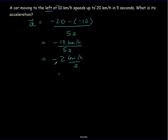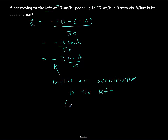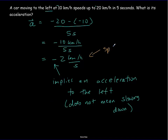The negative here implies an acceleration to the left. Notice in this case it doesn't mean it's slowing down — negative acceleration doesn't really mean slowing down; it means an acceleration to the left. This car is speeding up, but speeding up to the left.